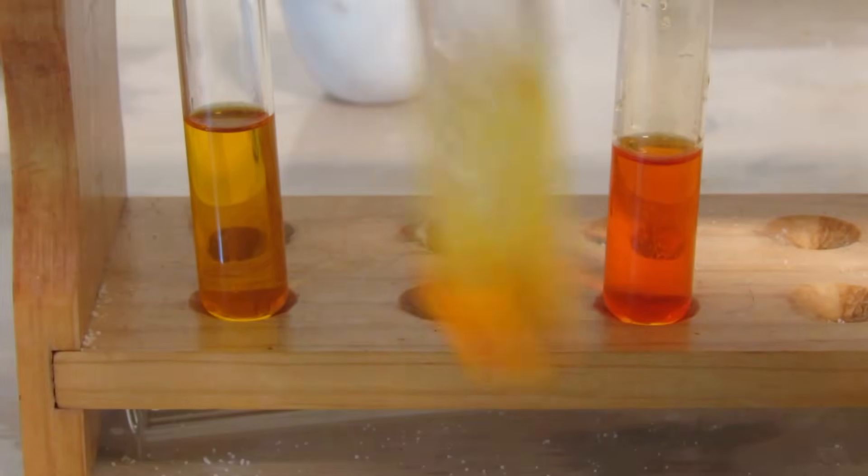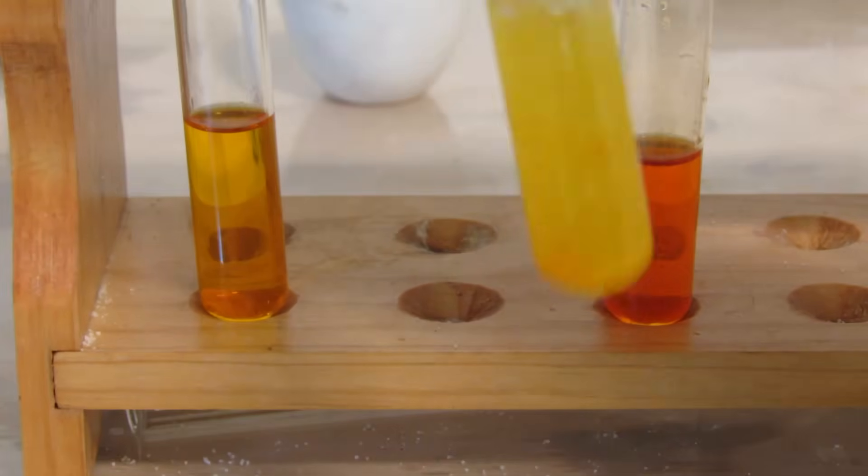Now stopper the test tube and begin shaking it. The yellow bromine color will slowly begin to disappear until it's all gone.